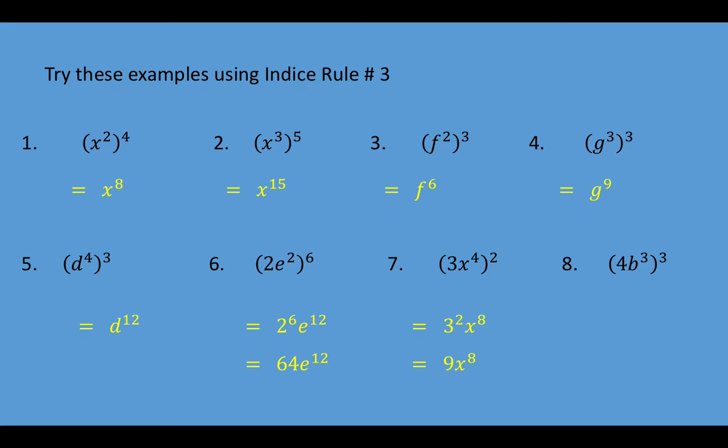Question number 8, we've got the same thing again. We're going to have 4 cubed, and b cubed cubed becomes b to the 9. Now, 4 times 4 is 16. If you take 16 and multiply it by 4, you end up with 64 once again. So this time we end up with 64b to the 9.